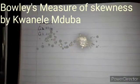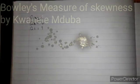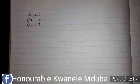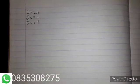Hi guys, this is Gwanele. In this video I'll show you how to calculate Bowley's measure of skewness. In order to calculate Bowley's measure you need to know how to calculate the quartiles. I already have a video for calculating the quartiles — I strongly recommend you watch that video, because you cannot calculate Bowley's measure without the quartiles. So the formula is: